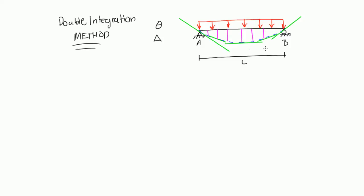The formula we use for the double integration method is d²y/dx², so the second derivative equals M over EI. This M is your internal moment — it's the same moment you use to draw shear and moment diagrams, particularly moment diagrams. You cut a beam somewhere in the middle, figure out what the moment is, and that's the same M.